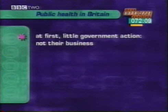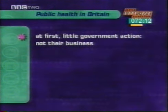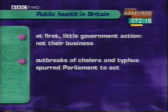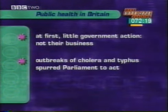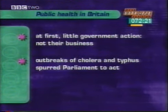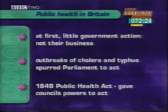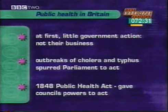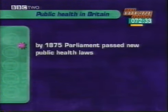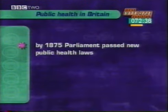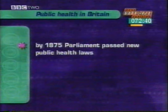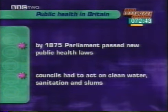To begin with, government didn't think it was up to them to deal with these problems. But during the 1830s and 40s, there were particularly bad outbreaks of cholera and typhus. Parliament began to recognise it had some responsibility for public health. In 1848, the first Public Health Act was passed, giving local councils powers to provide clean water and sanitation if they wished. By 1875, attitudes had changed in favour of government action, and Parliament passed new laws compelling councils to act on clean water, sanitation and slum clearance.